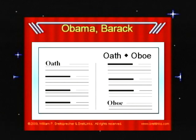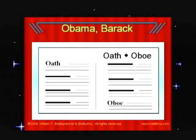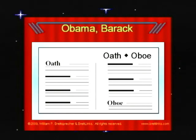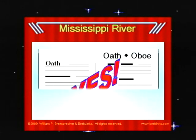Here's another page. The first guide word is oath, and the second guide word is oboe. OBA certainly comes after OAT because B comes after A, and OBA would be before OBO. Yes, we would find our listing for Barack Obama somewhere on these two pages.